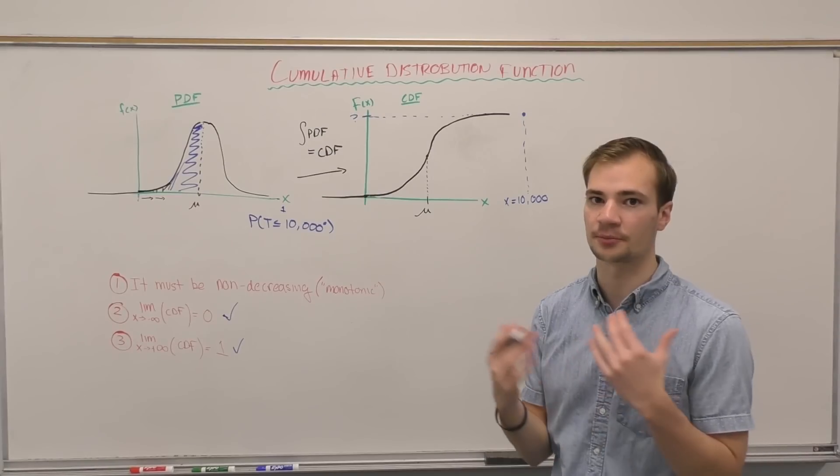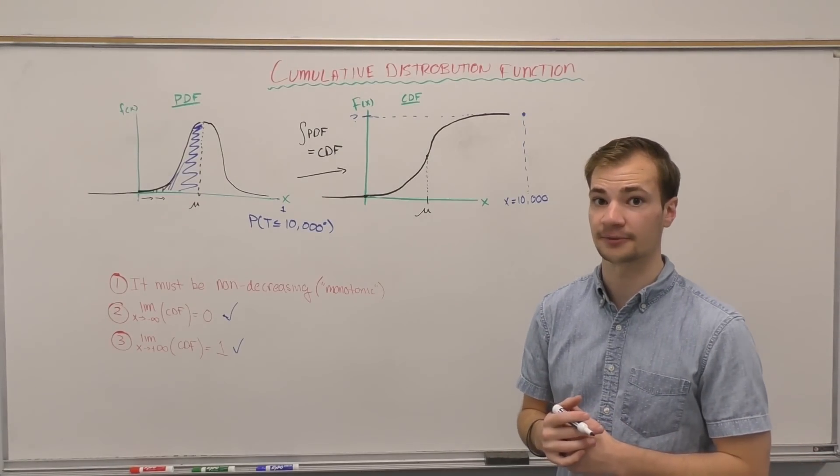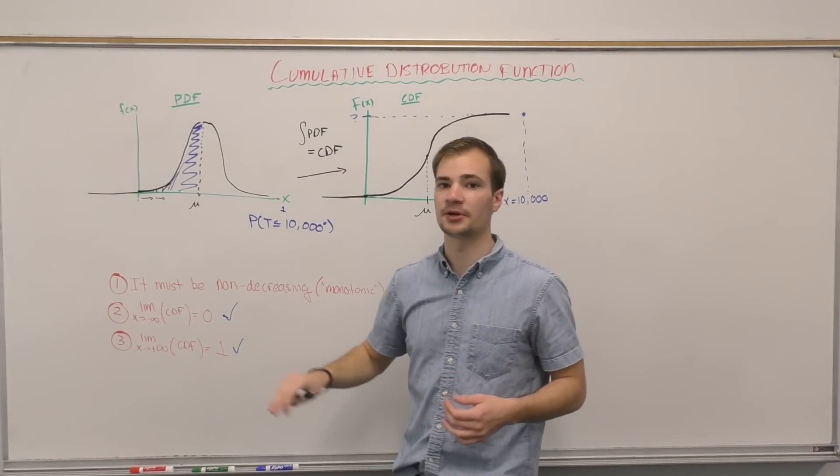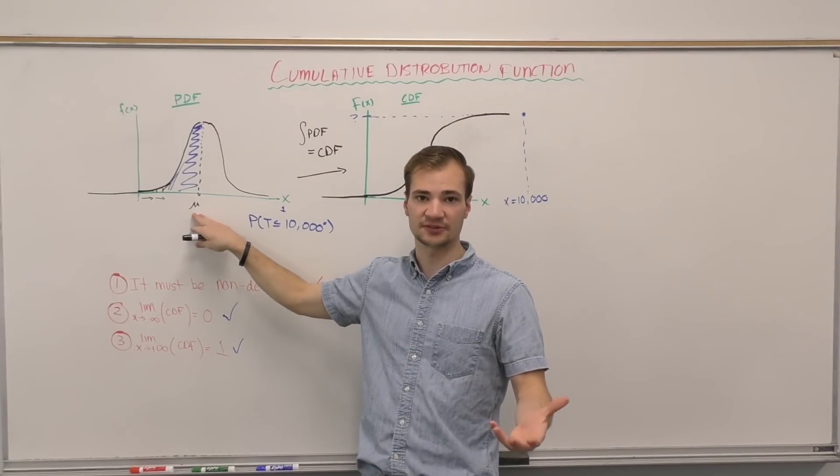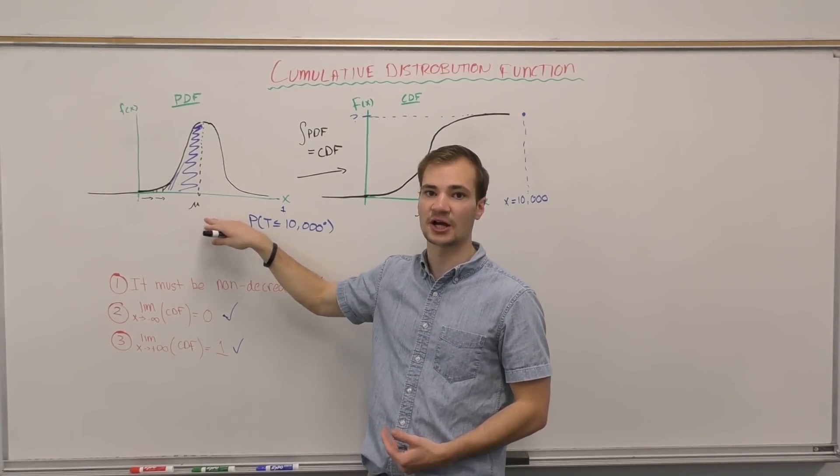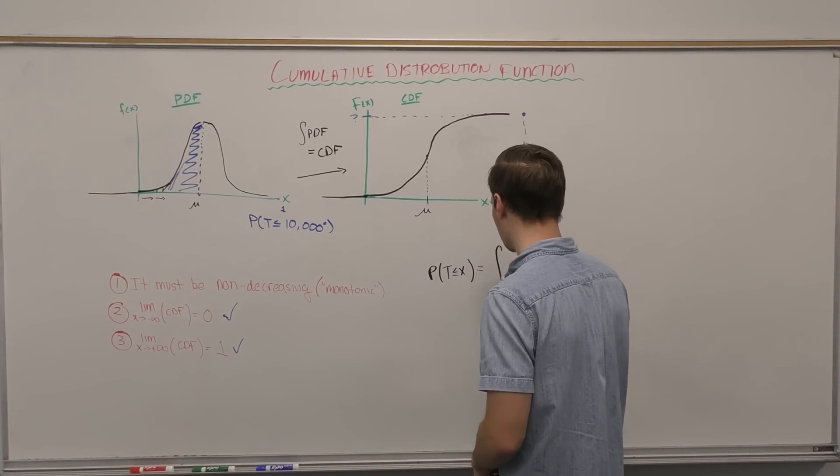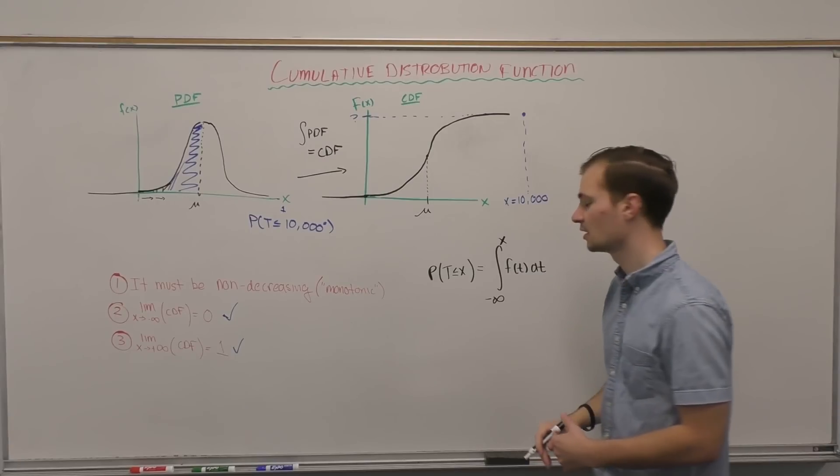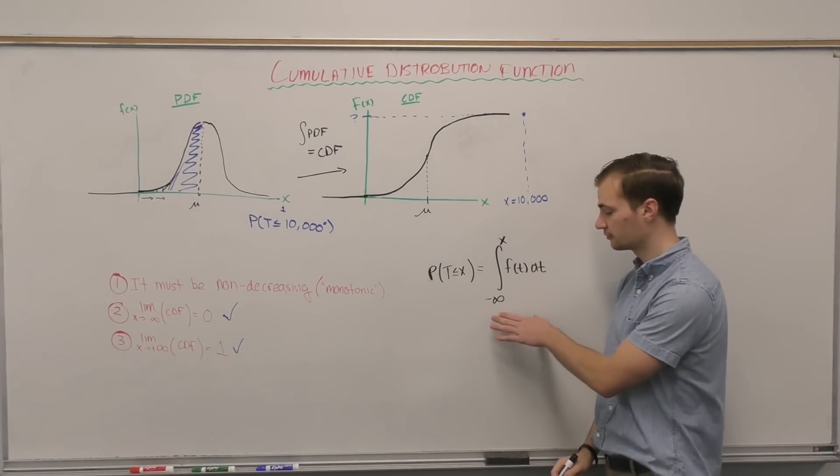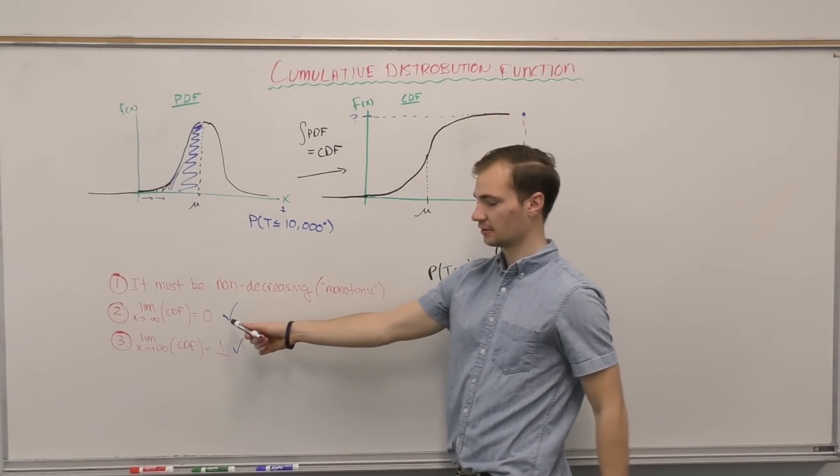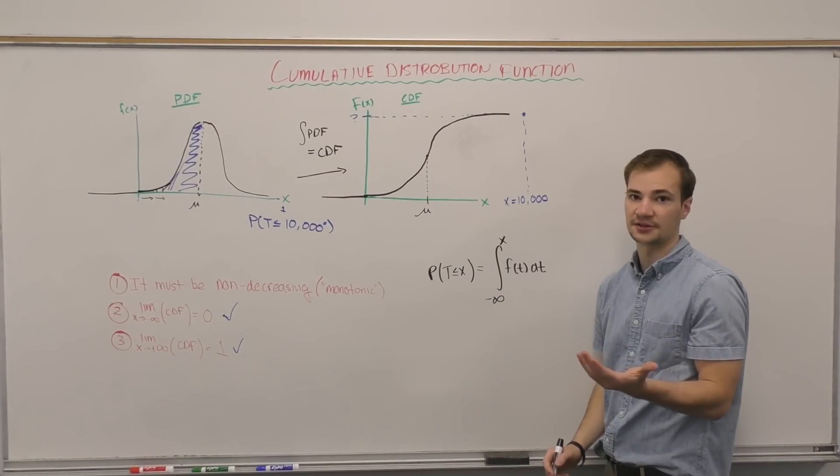And we're asked to find the CDF, or the probability, up until a point. So if we were asked to find the probability of a specific temperature occurring on this graph, mathematically, this would look like the following. All we have to do is the integral from negative infinity up until the x-value that we care about.